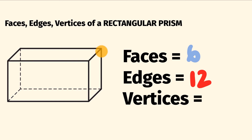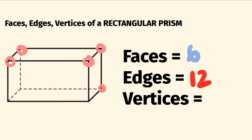Finally, to the number of vertices. These are the corners of the shape, the sharp bits. A rectangular prism has four vertices on the top here and four vertices on the bottom here. So all together, there are eight vertices.